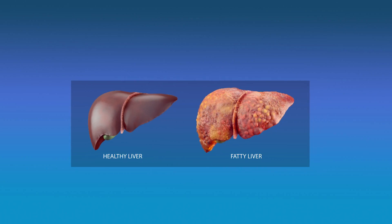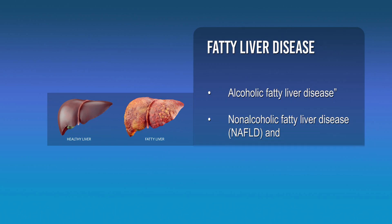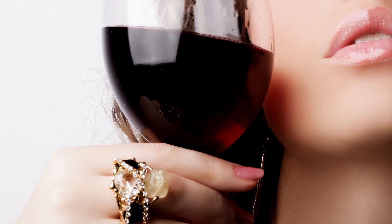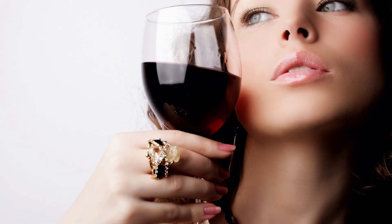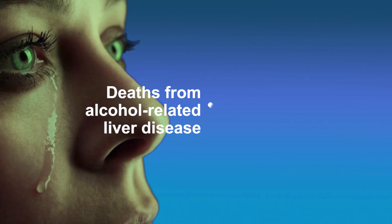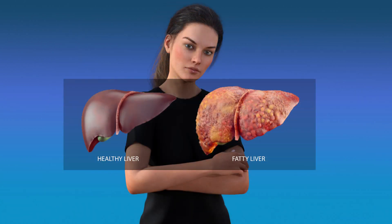There are two main types of fatty liver disease: alcoholic fatty liver disease and non-alcoholic fatty liver disease. In the past, alcohol was the most common cause of death from fatty liver disease. However, deaths from alcohol-related liver disease began to decline as doctors and patients became more aware of the link between alcohol consumption and liver damage. The result was more attention on other causes of fatty liver disease.